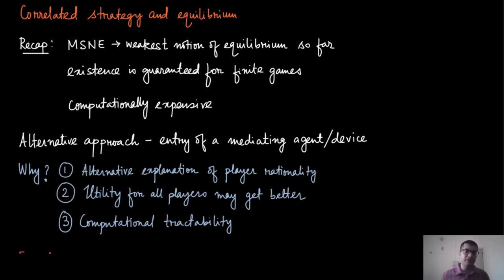The second reason is that utility for all players will get better. If you choose the correlated equilibrium carefully, the expected utility will be higher than what you get from a mixed strategy Nash equilibrium. The third point is computational tractability — the correlated equilibrium is much easier to compute than the mixed strategy Nash equilibrium.